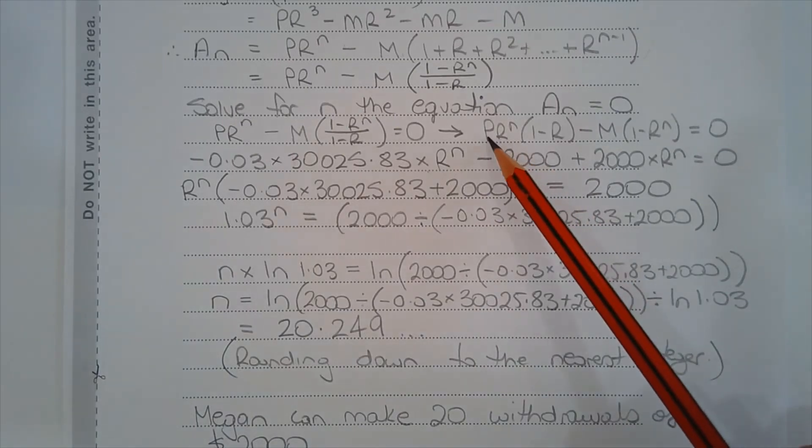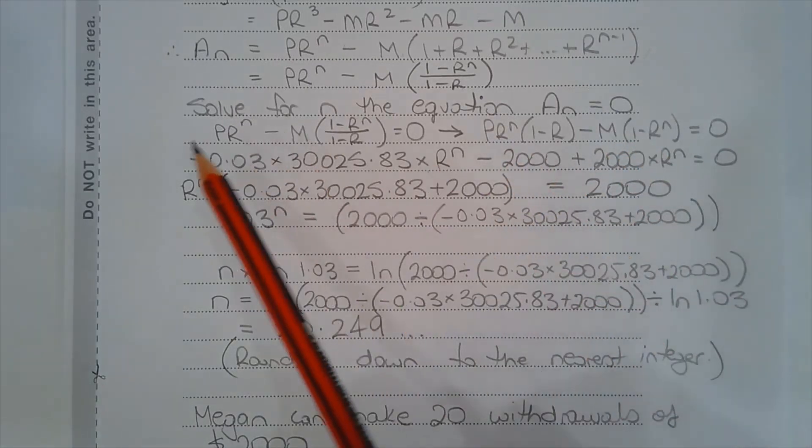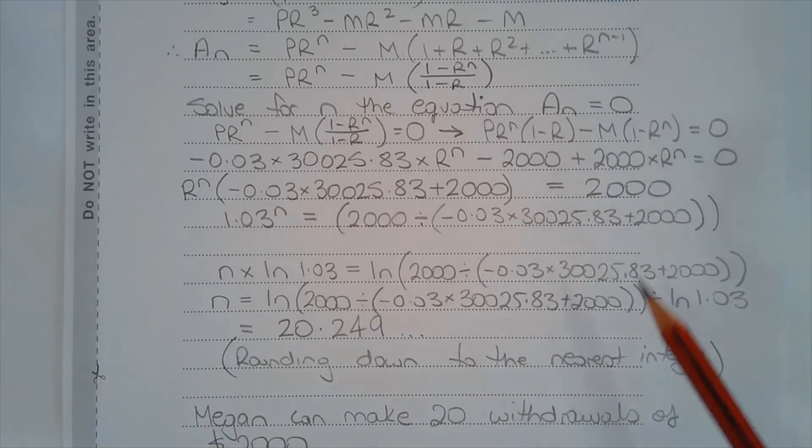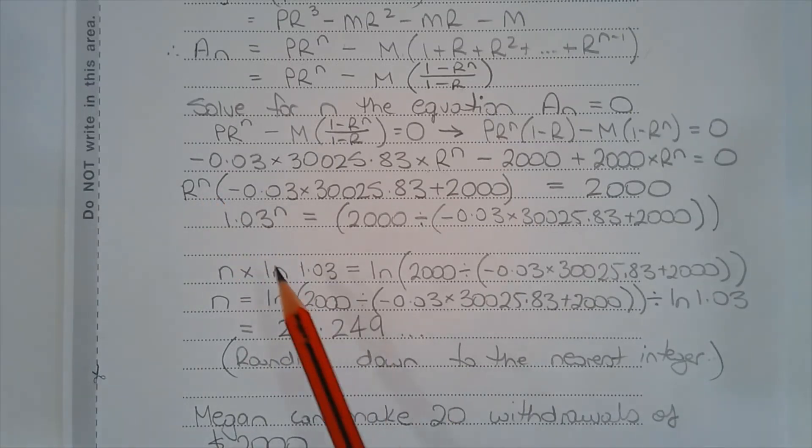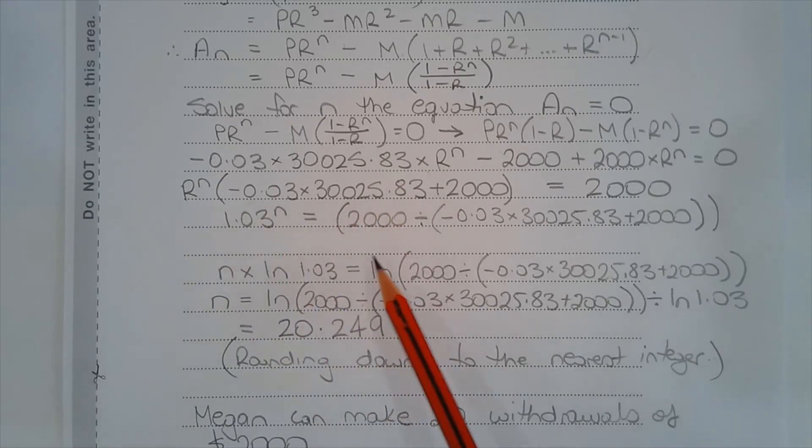Now we have values for P, R, and M and they've been substituted here. I've moved this negative 2,000 over the other side for the next line and also factorized out R to the power of N, knowing that we're going to use logarithms later on to make N the subject of the formula. And we end up with this line here where we have 1.03 to the power of N is equal to this expression here.